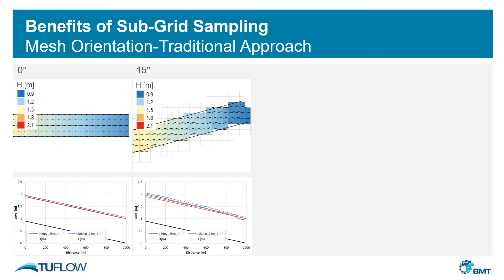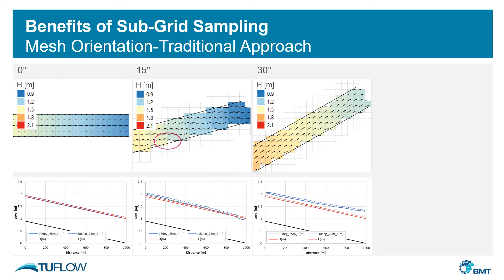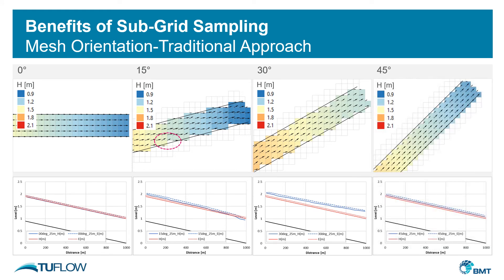If we start to misalign the mesh we start to distort the streamlines, because with only one elevation value per cell the cell can only be wet or dry. This means we get a sawtooth effect at the wet-dry boundary, which can lead to the generation of artificial head losses and we diverge from the theoretical outputs. If we misalign further we get further divergence, and then at a 45-degree misalignment we get less of a sawtooth effect and start to converge on the theoretical output again. This shows that with the traditional approach there are significant sensitivities to mesh orientation, particularly at higher velocities.